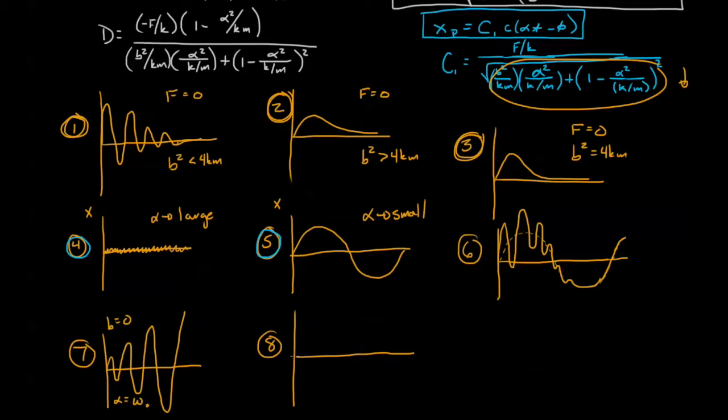And in fact it grows and grows until this B term becomes significant. So as it grows, you can imagine the velocities as the system is trying to get back to zero are going to get larger and larger.